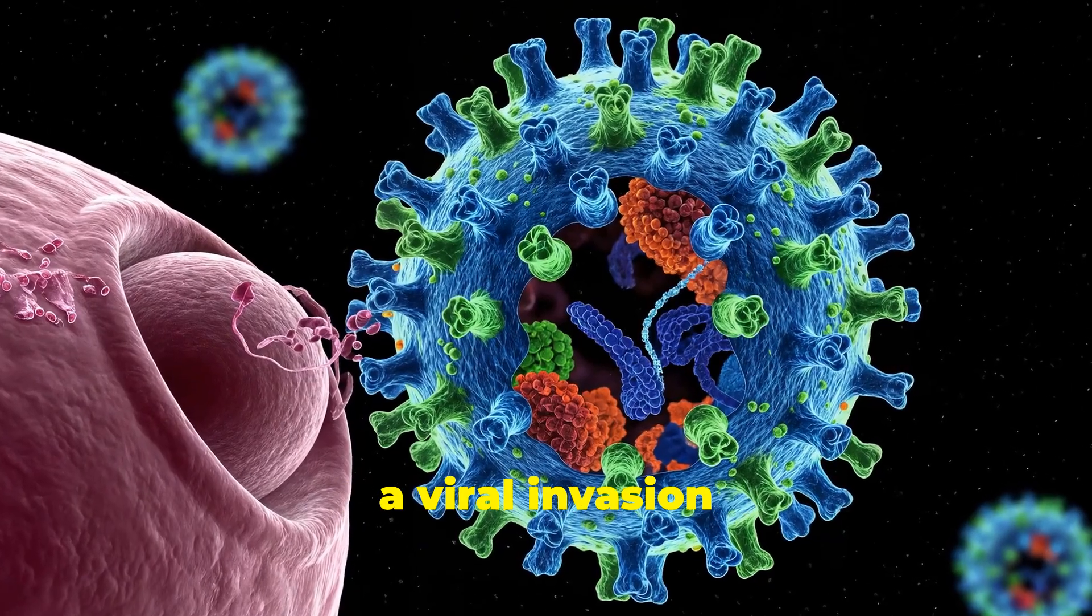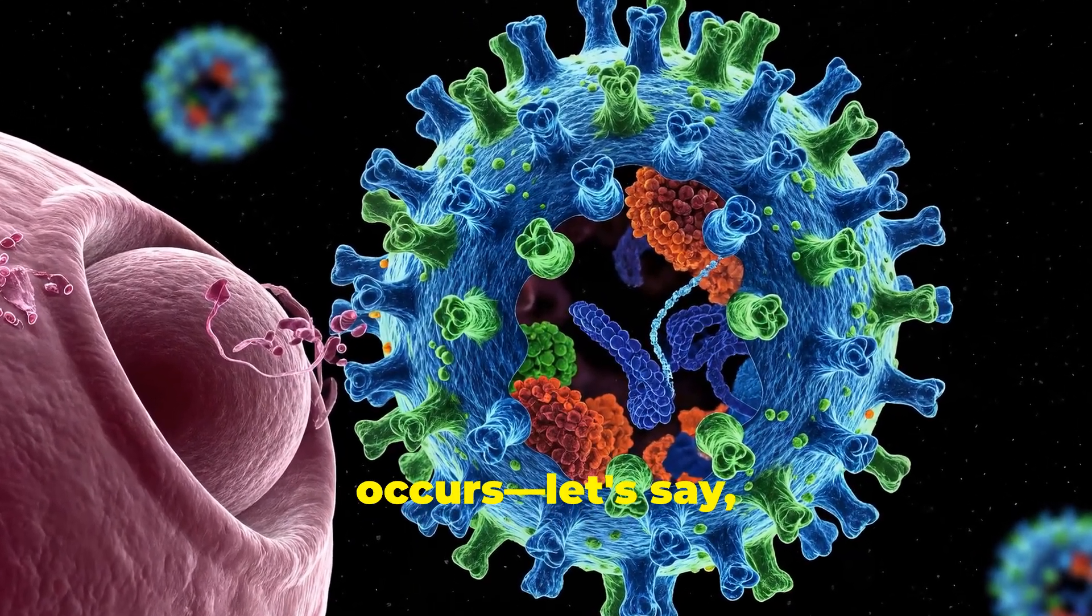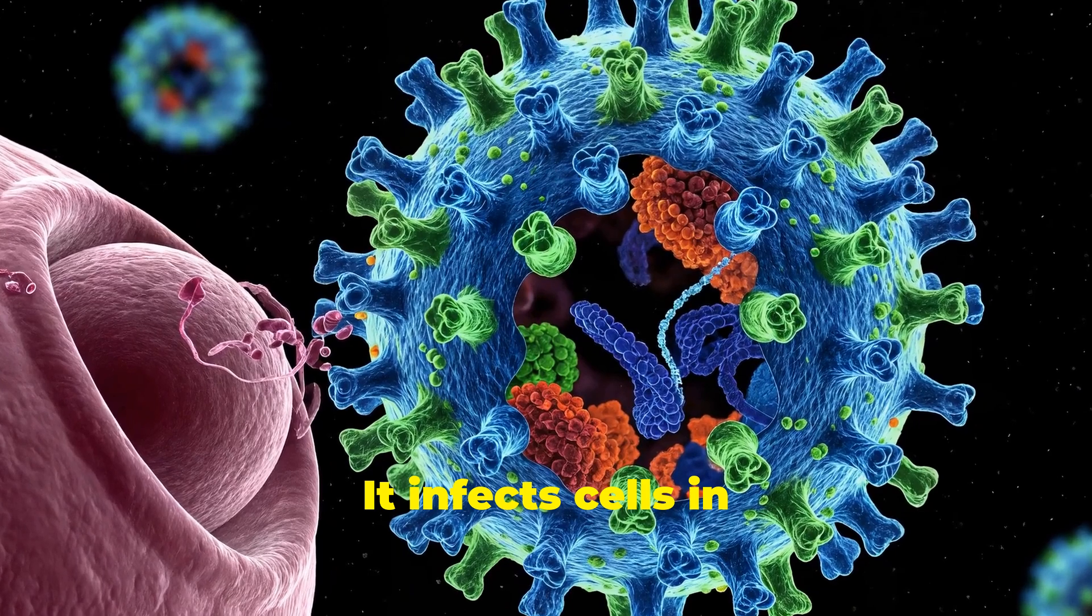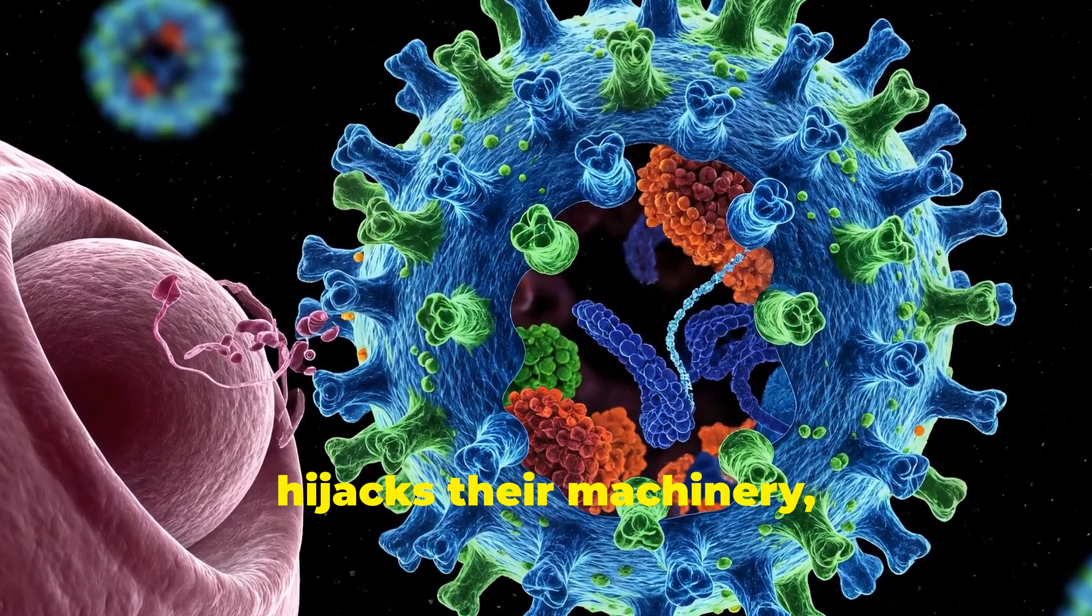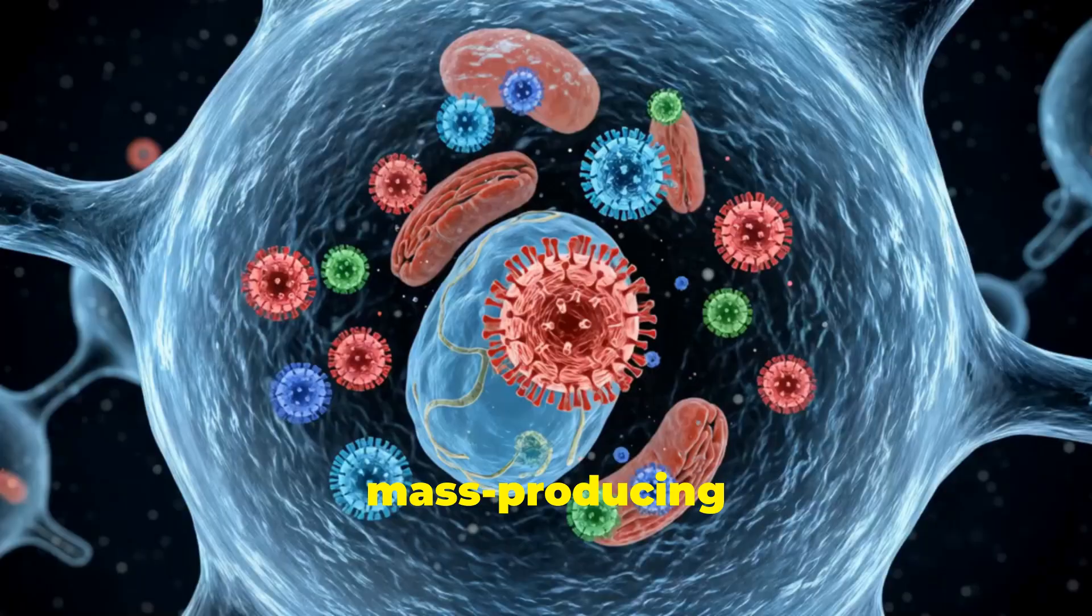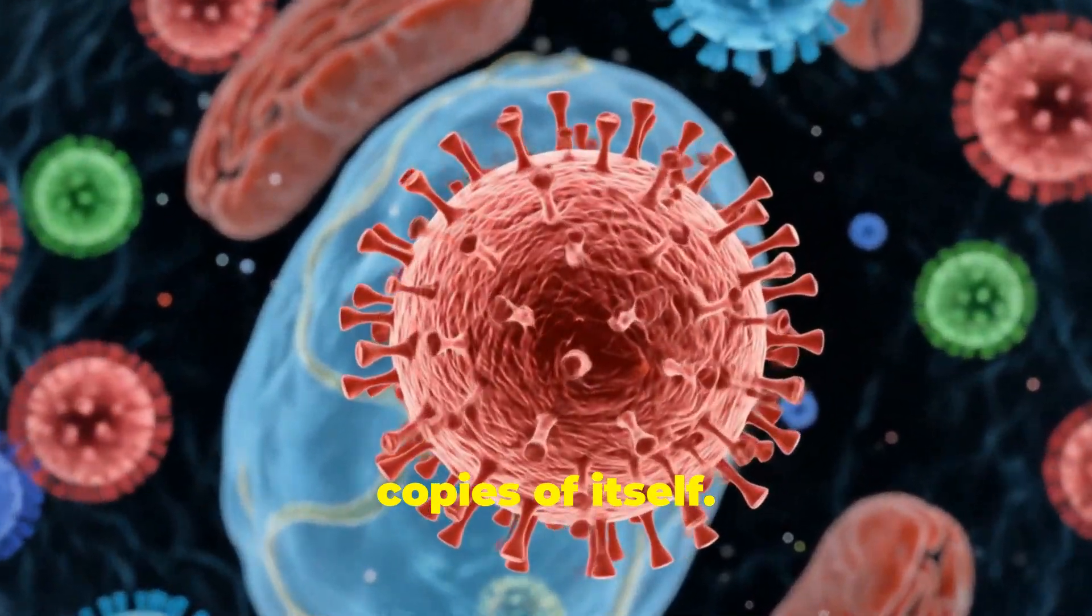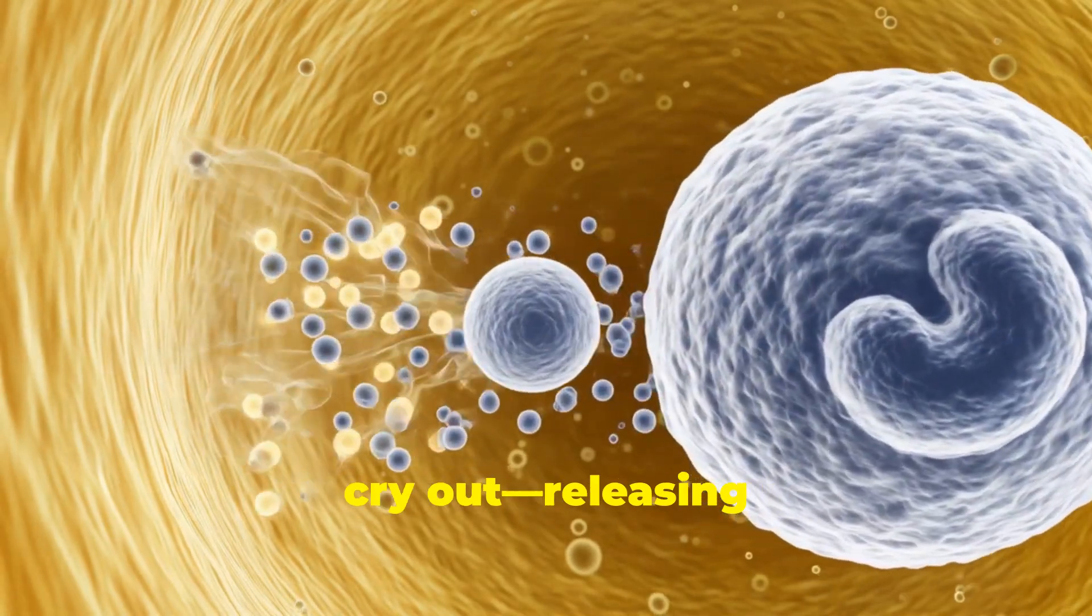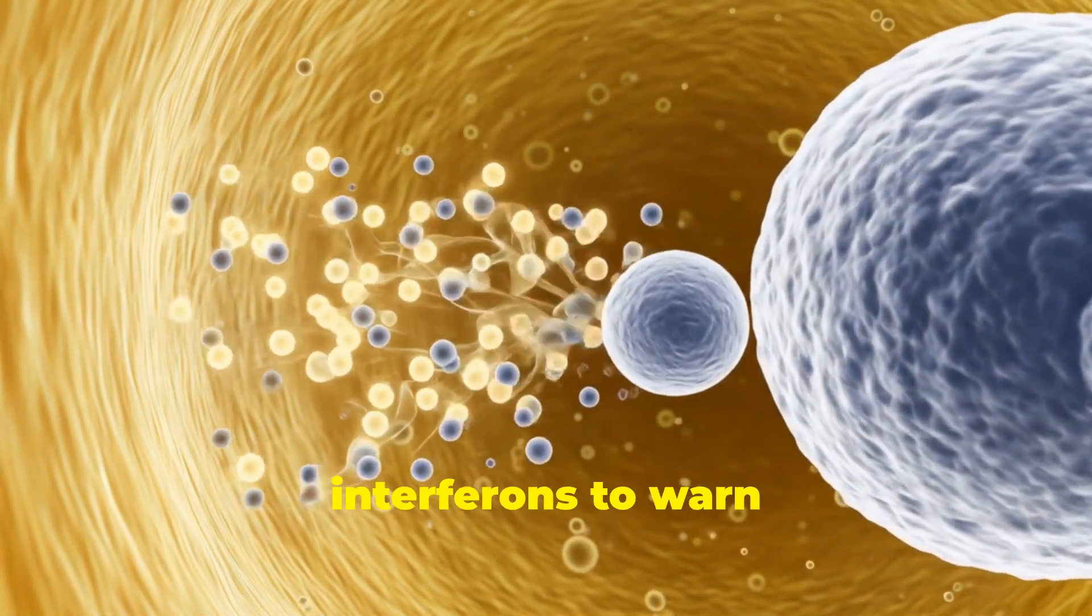Picture this. When a viral invasion occurs, let's say influenza, it infects cells in your lungs, hijacks their machinery, and begins mass-producing copies of itself. The infected cells cry out, releasing interferons to warn their neighbours.